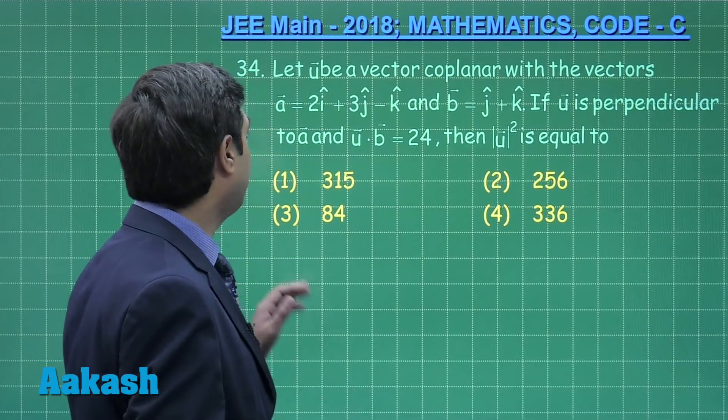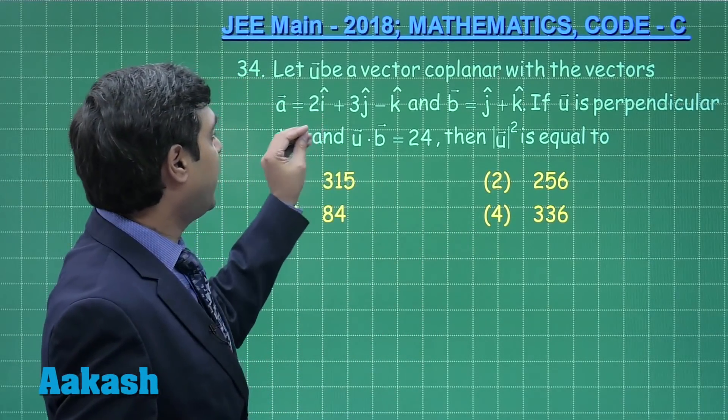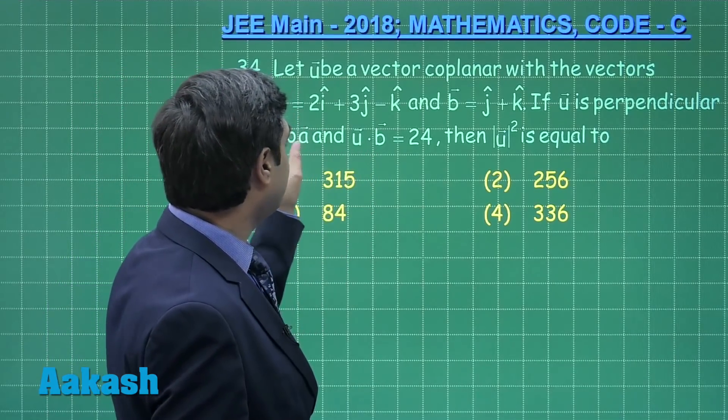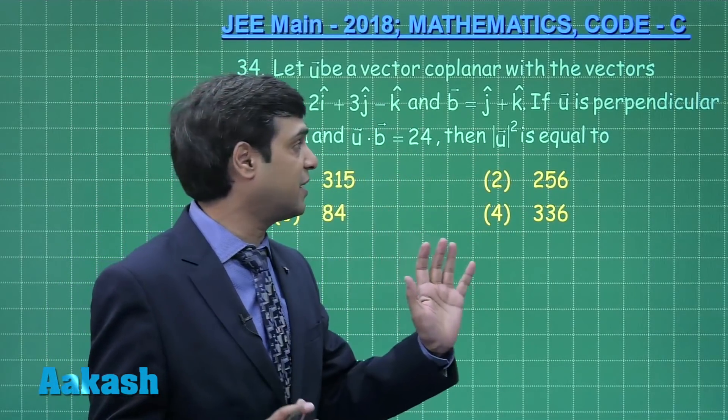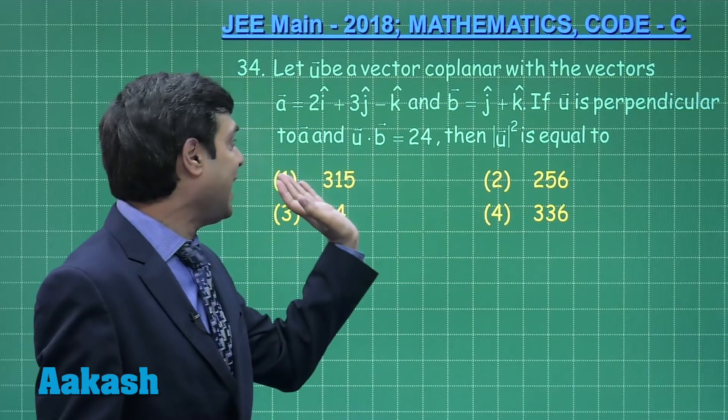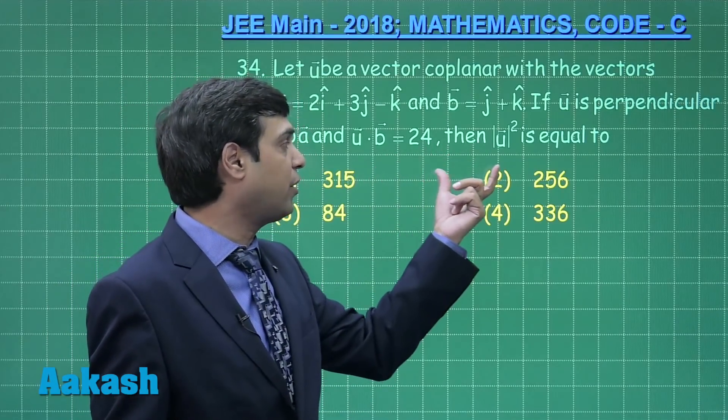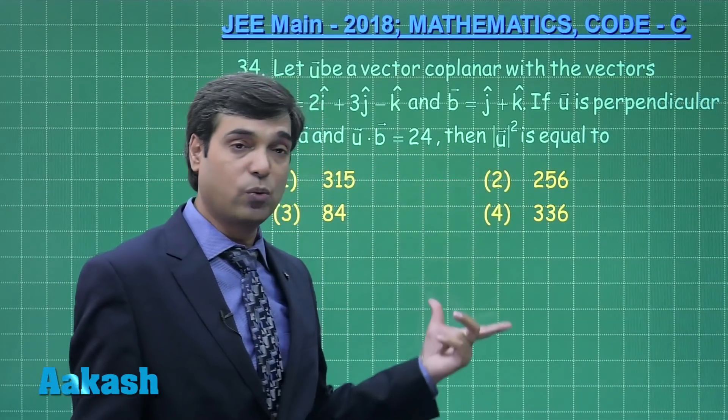Let us take question number 34, a question from vectors. Let u be the vector coplanar with the vectors a and b. Two vectors are given. If u is perpendicular to a and u dot b is given to me 24, then mod u square is equal to.